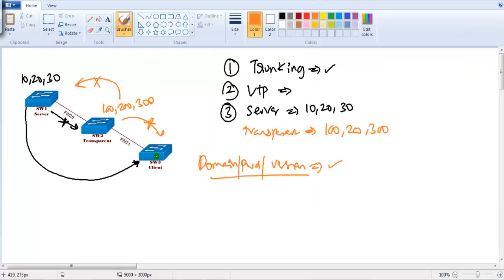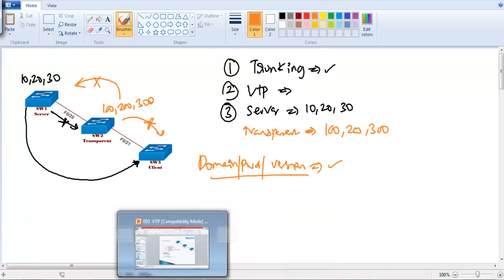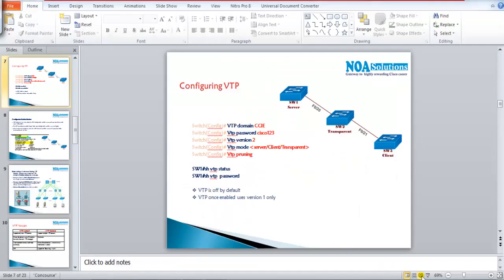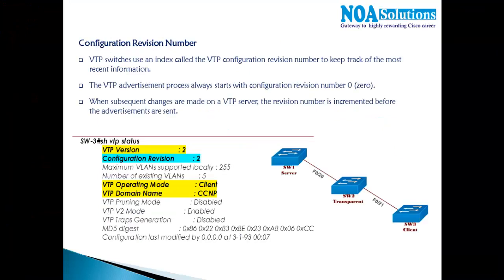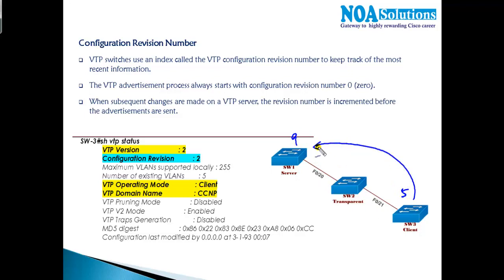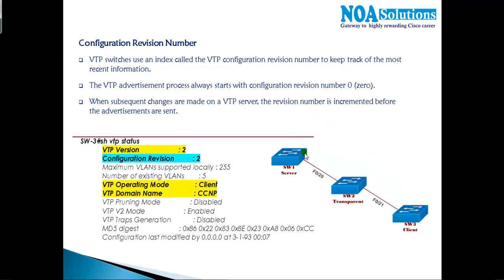The revision number will not increment at all for transparent mode, whether you add, modify, or delete VLAN information. The revision number is used as an index for VTP. When VTP messages are sent, if a client realizes the server has a higher revision number, it will synchronize the VLAN information automatically and update its revision number accordingly. Based on this revision number, it keeps track of any changes in your network.